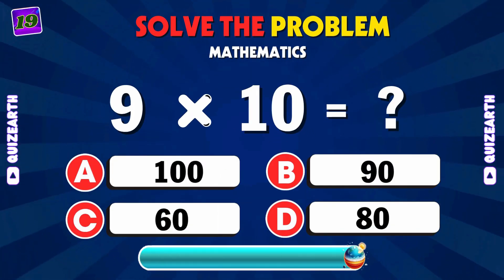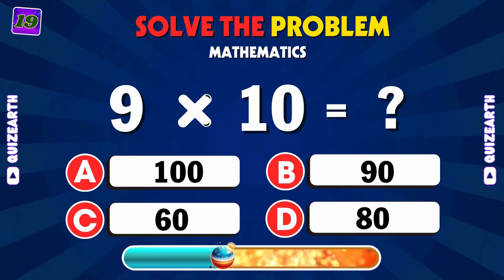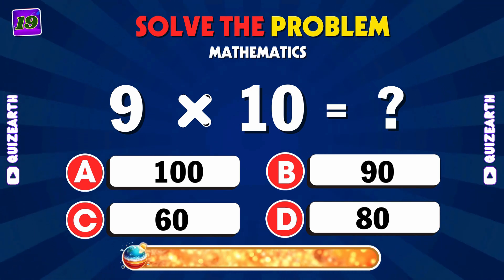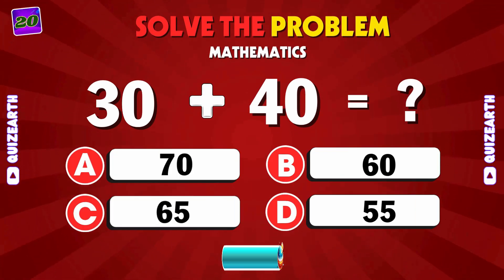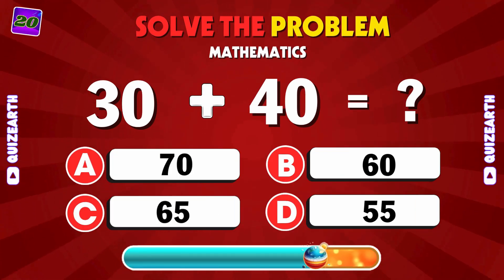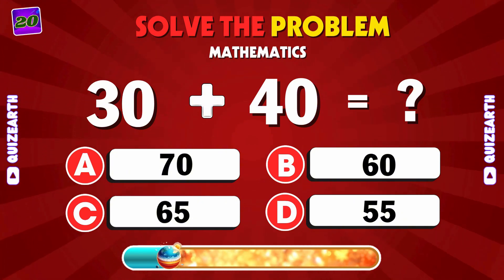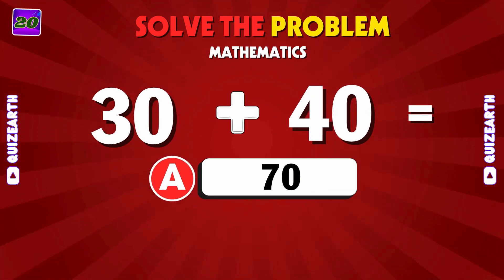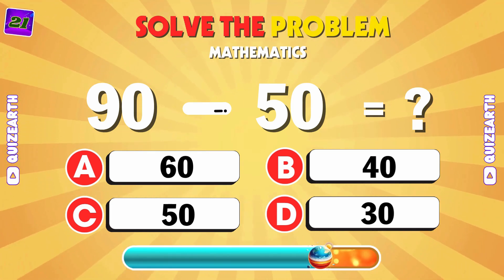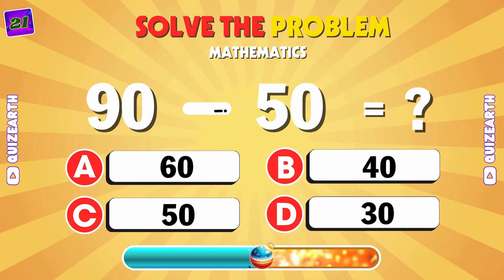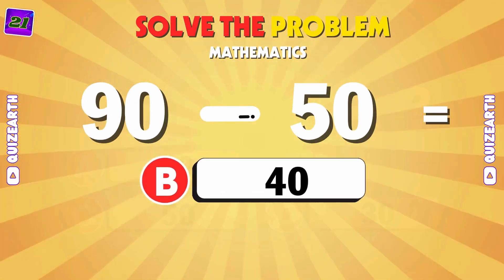Multiply now. What is 9 times 10? B: 90. What's 30 plus 40? A: 70. Subtract fast. What is 90 minus 50? B: 40.